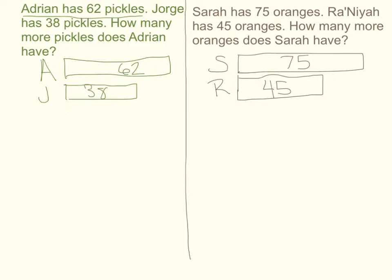Back to my problem — I'm on my third sentence: how many more pickles does Adrian have? Here is this word 'more.' My immediate instinct is to add, but I need to really read that question carefully. I can see that Adrian does have more pickles than Jorge. Since I know how many each of them has, I can tell what this space right here should equal — I'm going to put a question mark there. The question is asking me: what is this little empty space? How many more pickles would Jorge need to have to equal Adrian's number?